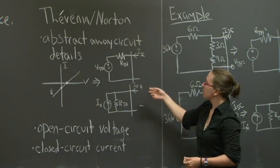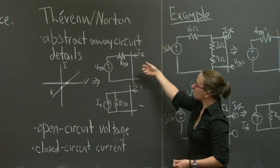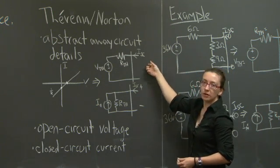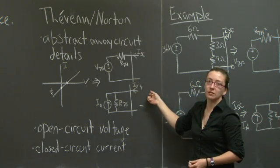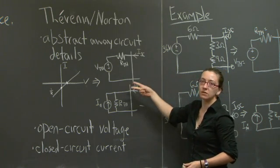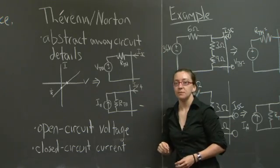Once we've solved for these values, we tend to express them either as a Thevenin-equivalent circuit or a Norton-equivalent circuit. And you can convert between the two. Let's walk through an example.